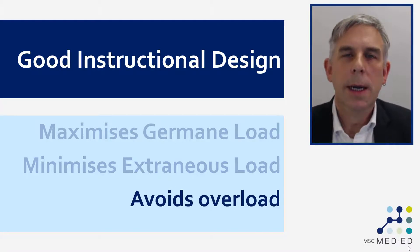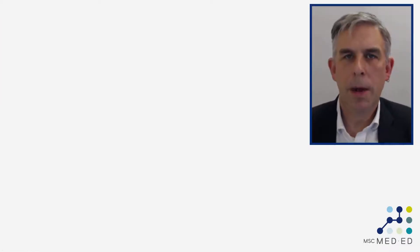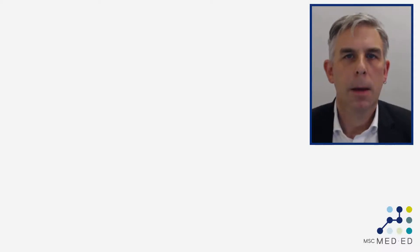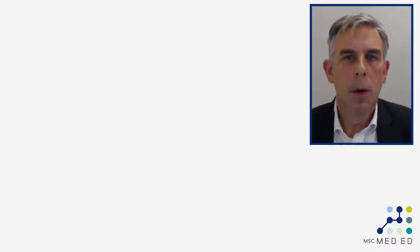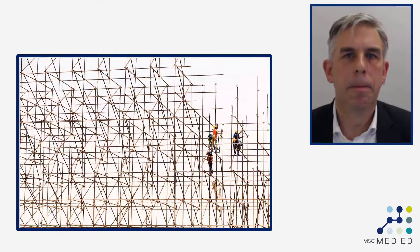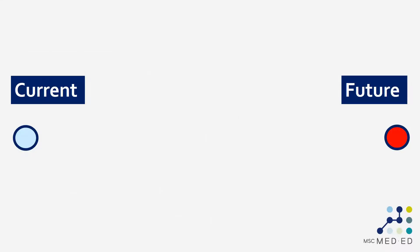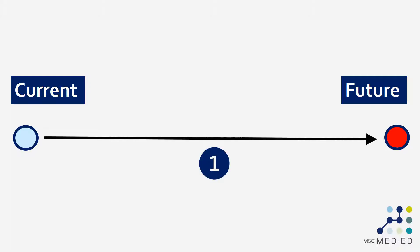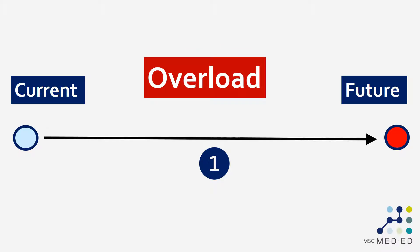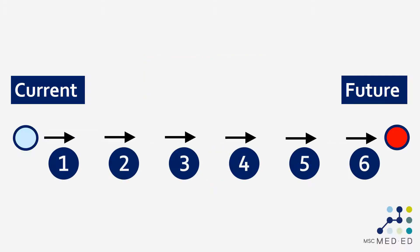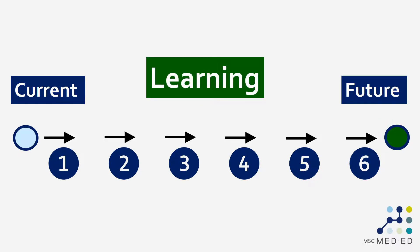Now we're going to move from talking about extraneous load into overload in general. The research into cognitive load theory has come up with a whole range of different approaches to teaching and learning, and there are some common principles that underlie these approaches. One key principle is the provision of scaffolding. What learners are trying to do is get from their state of current knowledge to a state of future knowledge. If we do that all in one big step — the same as trying to construct a building without scaffolding — we're going to fail. If learners have to hold too much information in their mind at any one time, they're going to become overloaded. Cognitive load theory breaks learning down into shorter steps so learners don't become overloaded.